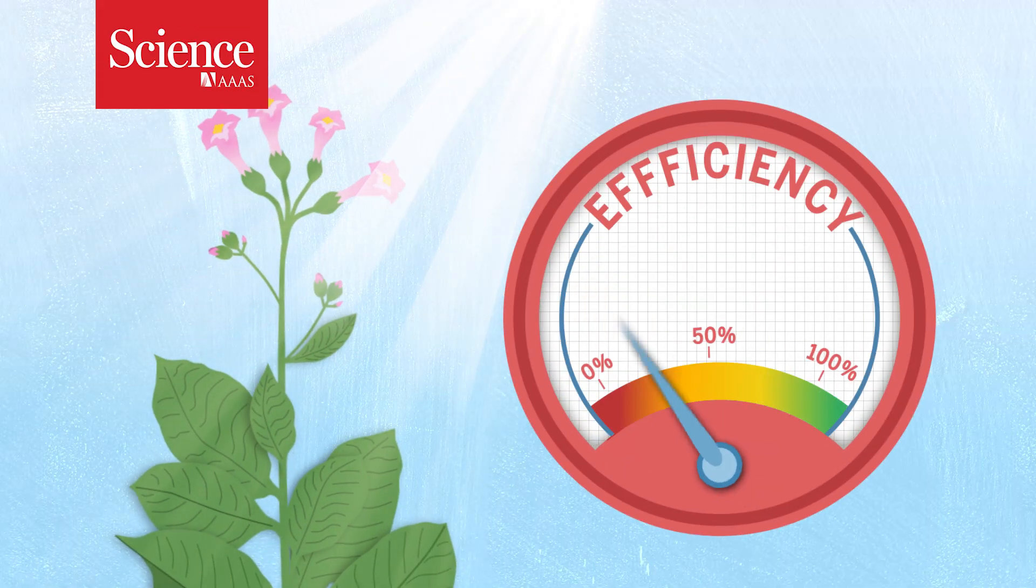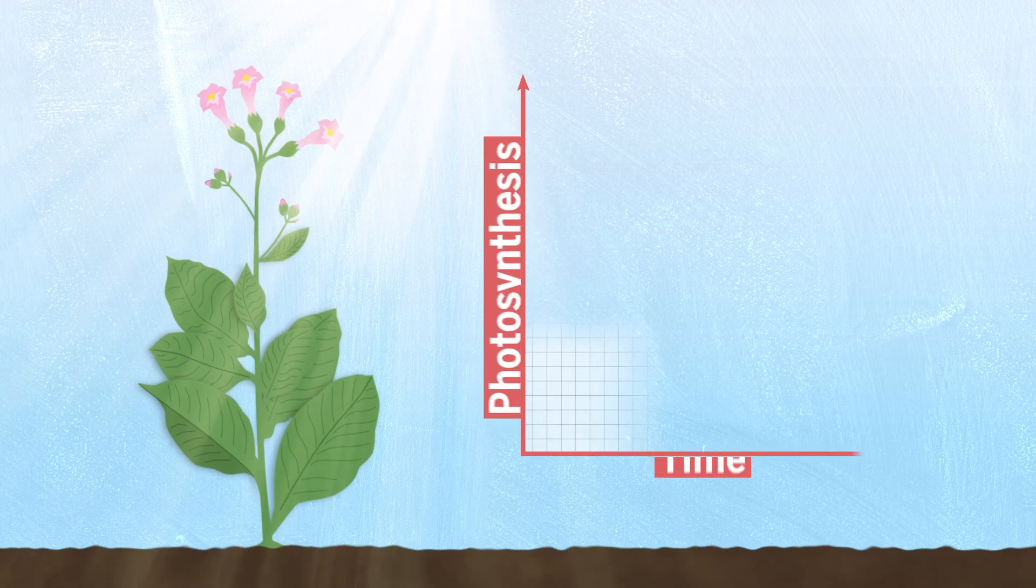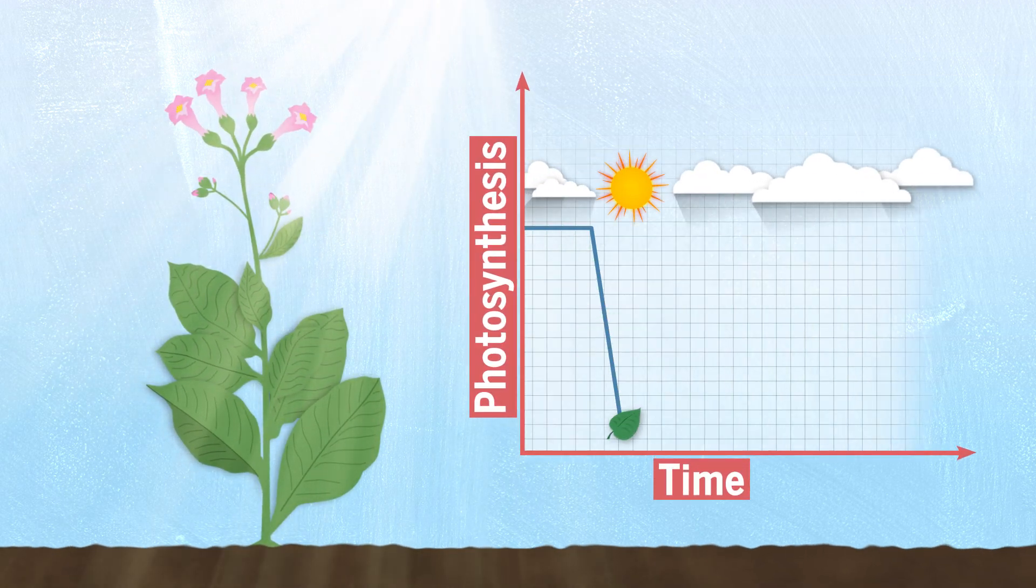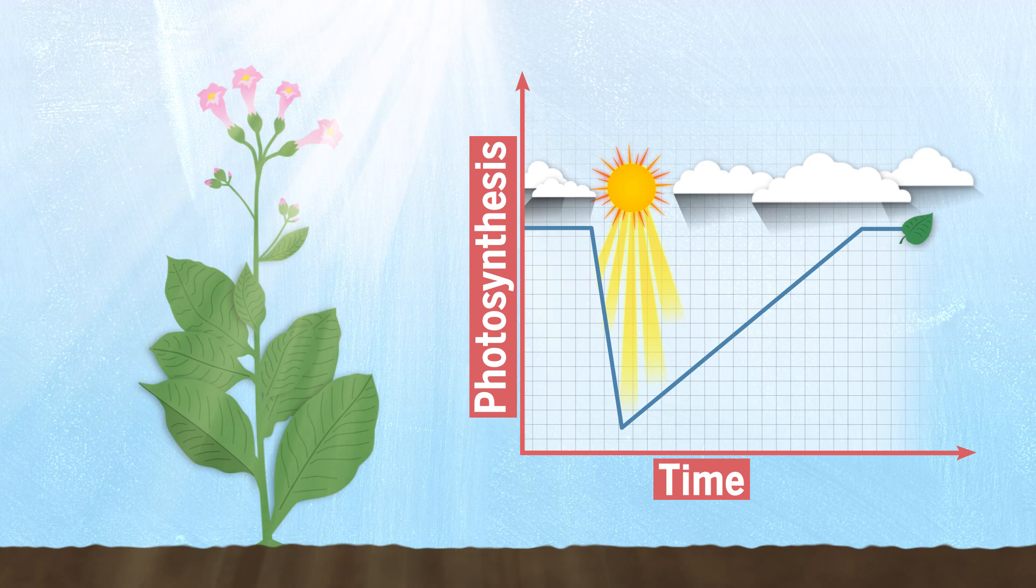Plants aren't always operating at 100% efficiency. In fact, in bright sunlight they ramp down the efficiency of photosynthesis to avoid damage to key molecules.